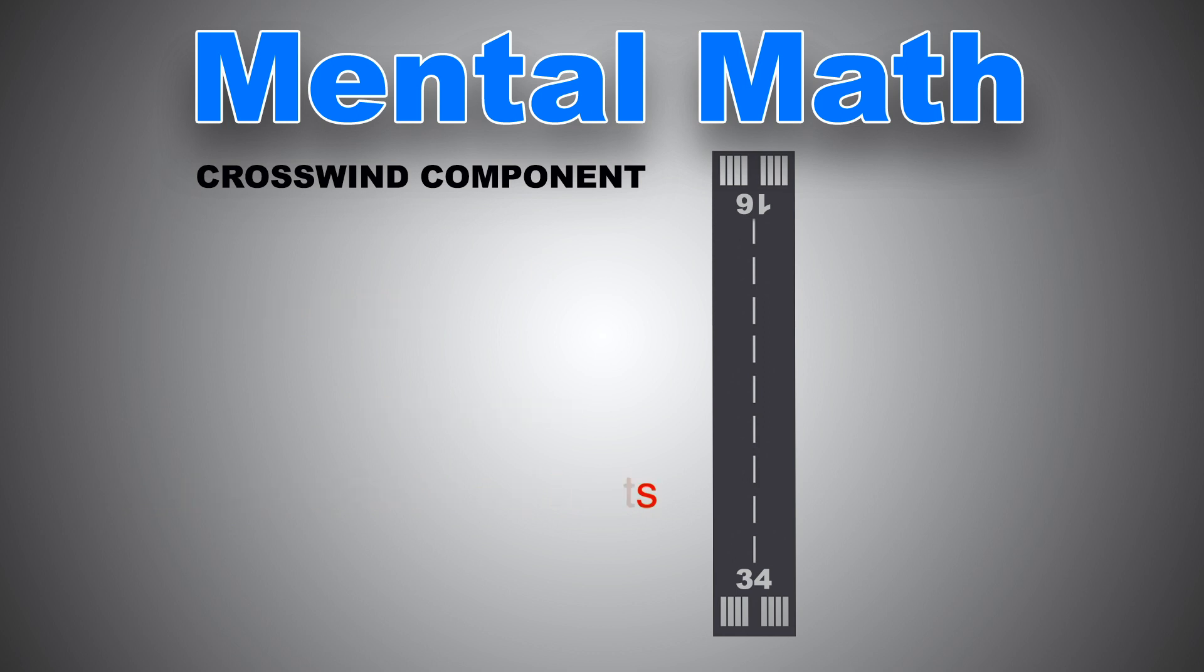Let's check with the formula. We have sine of the angular difference between 336 and 320, multiply that by the wind speed, 20, and we get 5.5. Half a knot isn't a big of a deal, right?